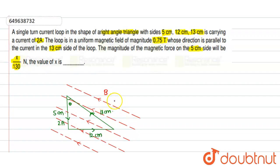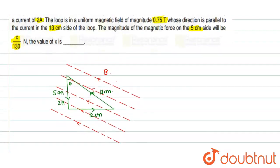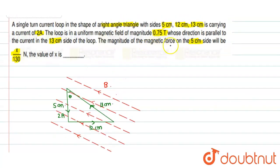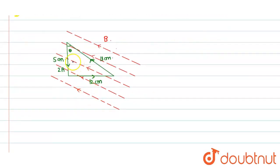Dekhoi, here B equal to 0.75 tesla, the magnetic field horizontally in the direction of the 13 cm side. As we can see here, toh apan ko kya nikalna hai? The magnitude of the magnetic force on the 5 cm side. F at 5 cm will be equal to IBL times sine theta, hai kai?